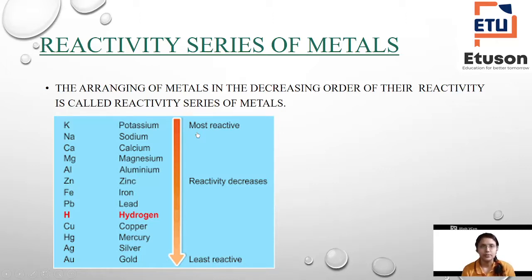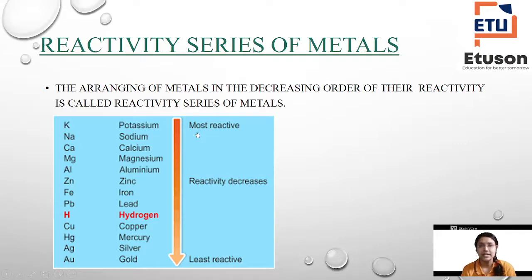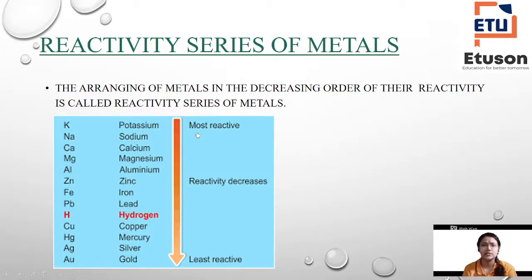You can see a particular table in blue color. Let's read it: potassium (K) is the most reactive one, then comes sodium (Na), calcium (Ca), magnesium (Mg), aluminum (Al), zinc (Zn), iron (Fe), lead (Pb), hydrogen (H) — I have marked hydrogen as a non-metal — copper (Cu), mercury (Hg), silver (Ag), and gold (Au). The most reactive is potassium and the least reactive metal is gold. The reactivity decreases throughout the series.